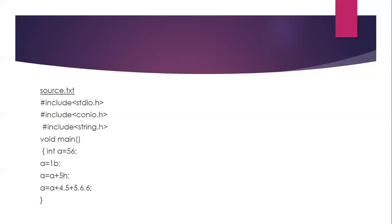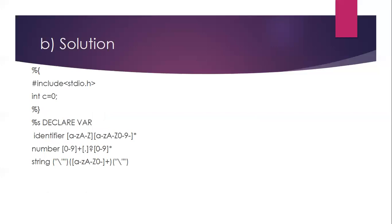Now for part B of the program, we have used start states. Under %s declare, two start states are declared: 'declare' and 'variable'. After that, we define the regular expressions: one to recognize an identifier, one to recognize a number, and one to recognize a string.